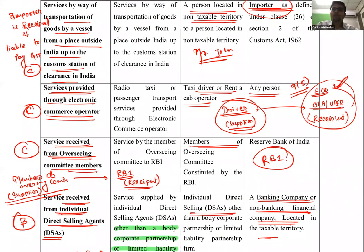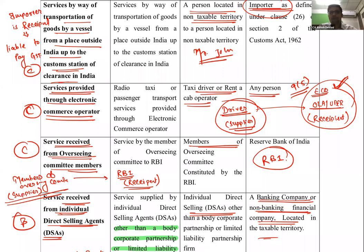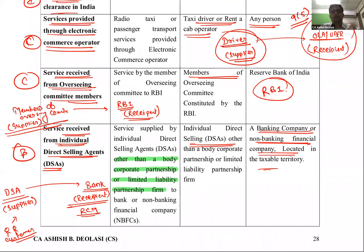नौवीं service — services by way of transportation of goods by vessel from a place outside India up to the custom station of clearance in India। Example: Japan का Mr. John ने goods भेजे vessel से, और Indian importer यहाँ है। Indian government John को नहीं पकड़ेगी — Indian importer से GST वसूल करेगी। यहाँ GST Indian importer को भरना पड़ेगा।